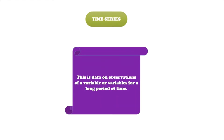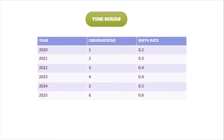Time series data is data on observations of a variable or variables for a long period of time. The table that you see here is an example of data that is in time series form. On the far left, you see the number of years; in the middle, you see the observations; and on the far right, you see the variable itself, which in this case is birth rate.